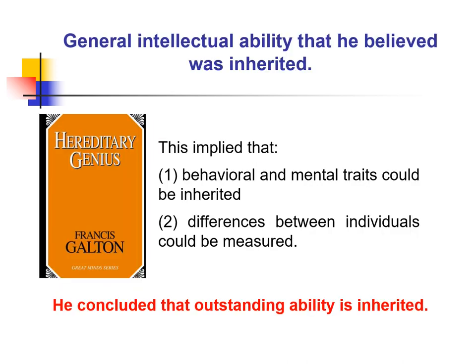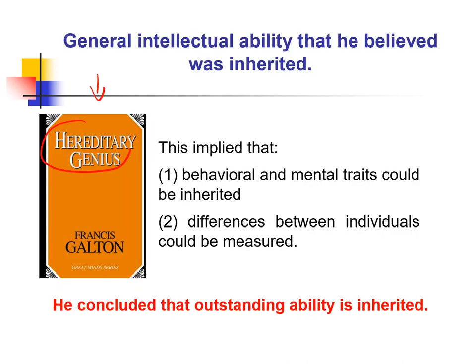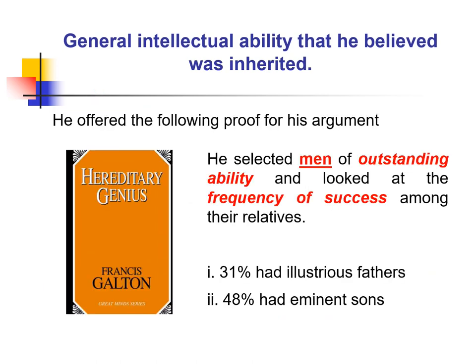The name of this book will be asked on the test, along with what he implied in it. He found two main findings: one, that behavioral and mental traits could be inherited — which is partially true; and two, that differences between individuals could be measured — also partially true, though the way he did it was not correct. It was a good beginning for analyzing differences in intelligence and morphometric differences in humans. However, there was no connection between the differences he analyzed and intelligence, yet he concluded that outstanding ability can be inherited.